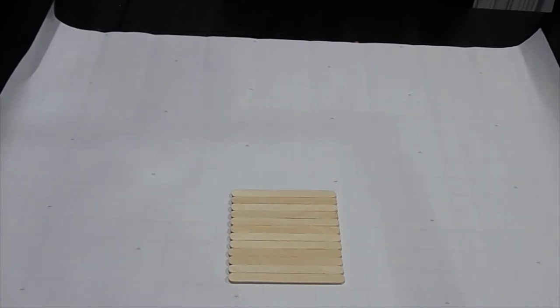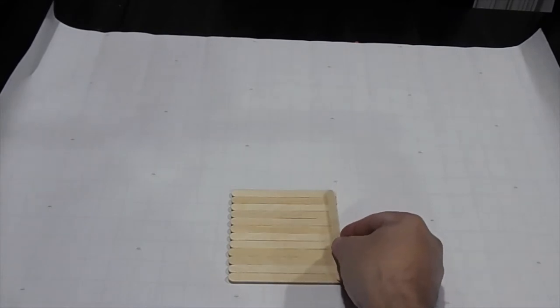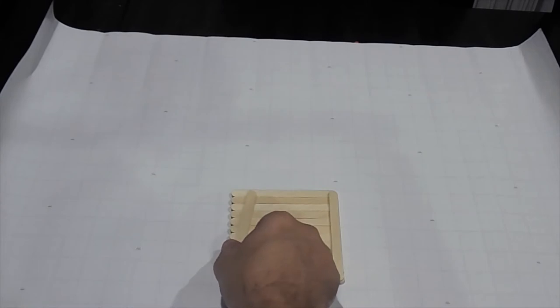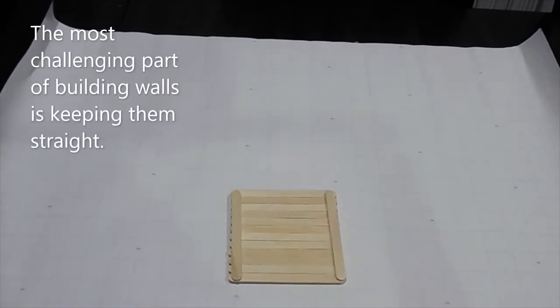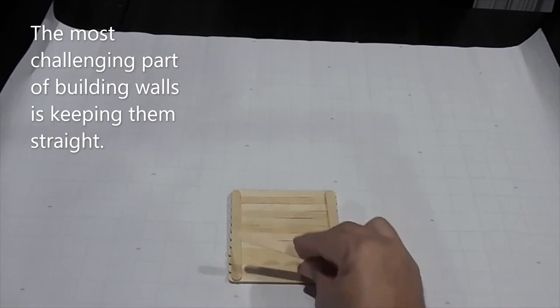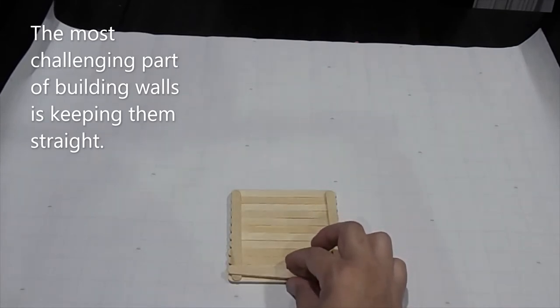Now the walls are going to be made by alternating the popsicle sticks. So we're going to do it kind of like they would do a log cabin where you have logs on each side just going back and forth.